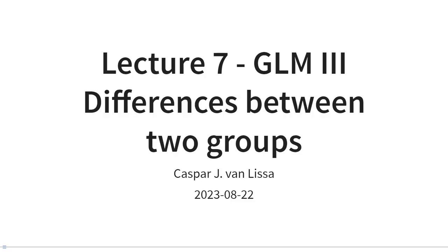Welcome to the third installment of our lecture series on the general linear model. Today we will learn how to describe differences between two groups using the general linear model. You can use this technique anytime you have a binary predictor variable and a continuous outcome variable. This is a basic extension of the bivariate linear regression model.